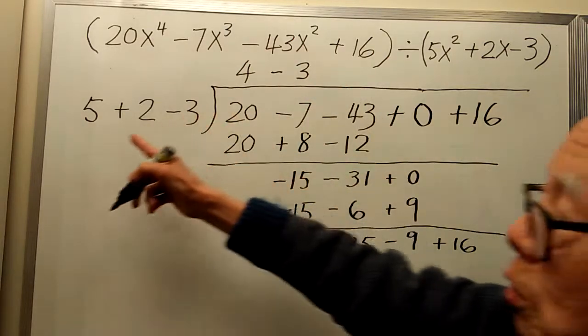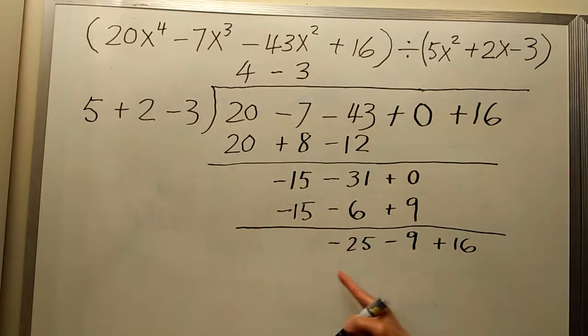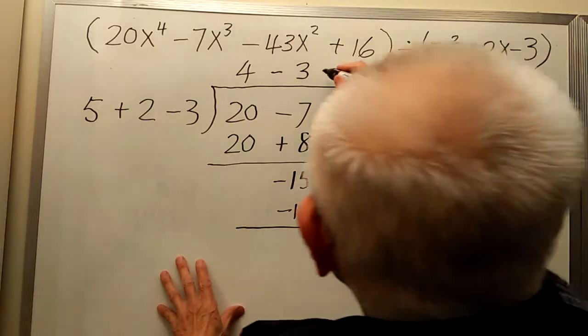What times 5 gives you negative 25? It is negative 5.